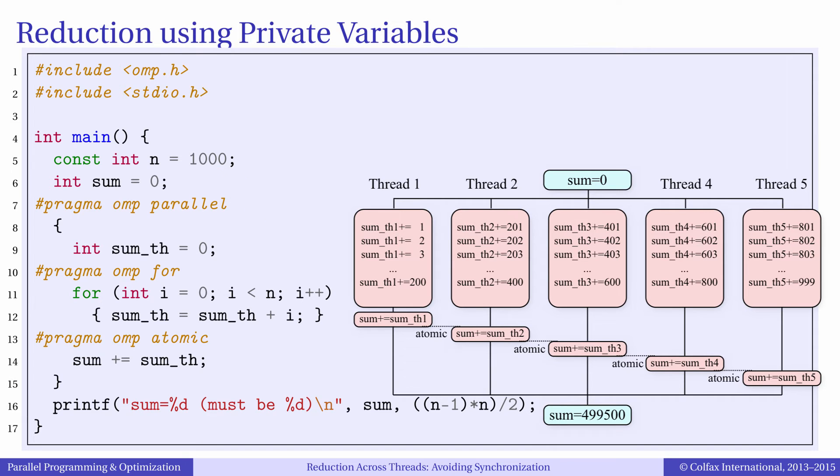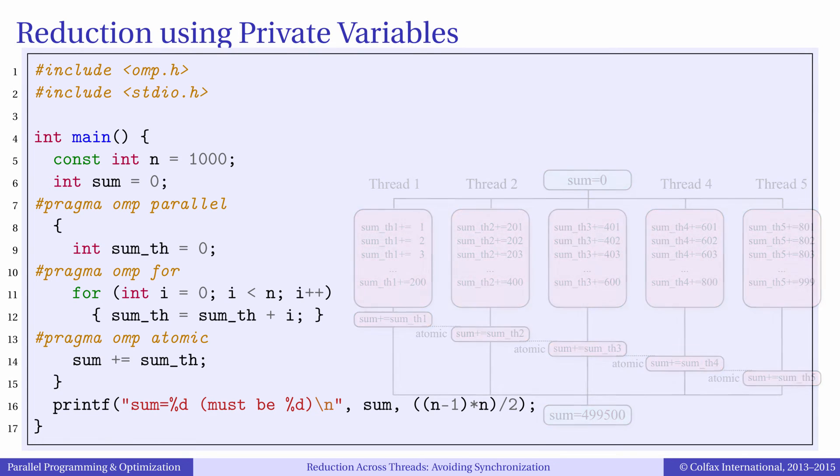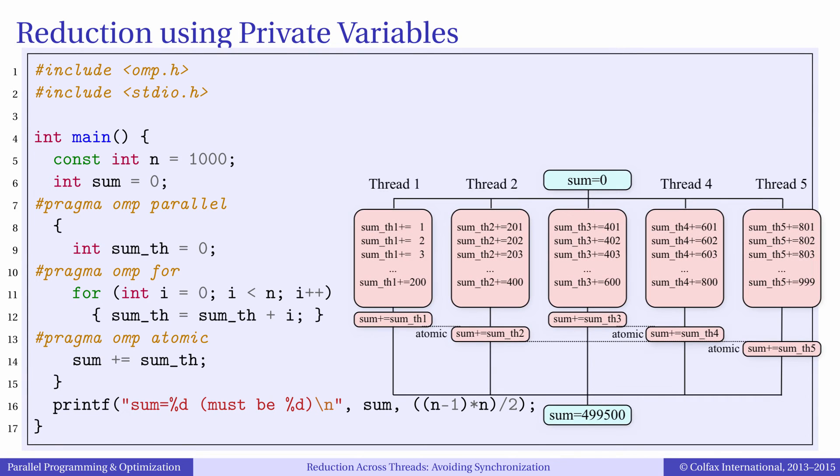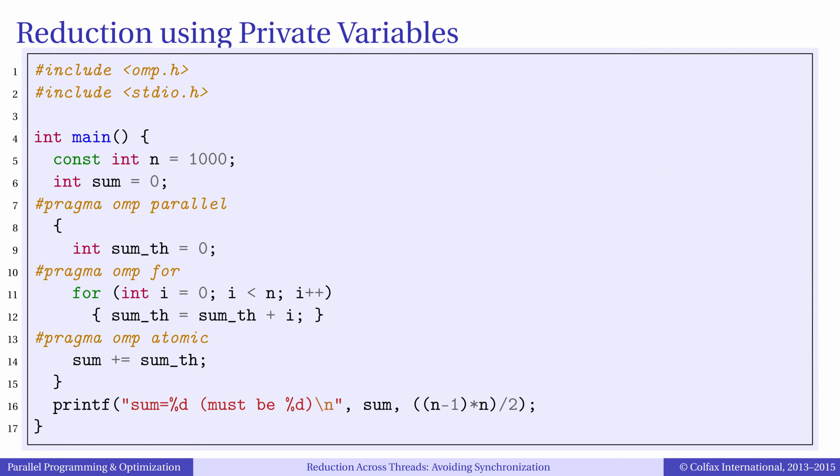The algorithm shown here can be improved further by implementing for example binary tree reduction instead of sequential reduction. In this case the amount of synchronization will be proportional to the logarithm of the number of threads. However, for parallel loops with great amount of computation the simple algorithm we have implemented here may be sufficient.